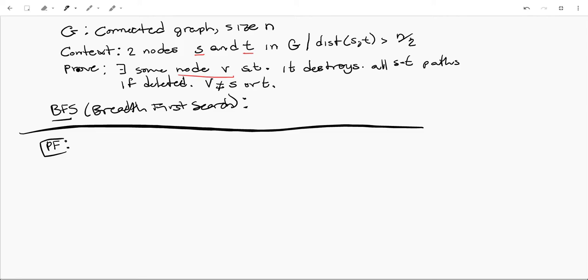We're trying to prove that there exists some node V such that it destroys all ST paths if we delete it. And we are also stipulating that V, the node we can delete, is not equal to S or T, because obviously if you want to destroy an ST path, you can just delete S or T. We're saying no, that's not an option, it has to be some other node.